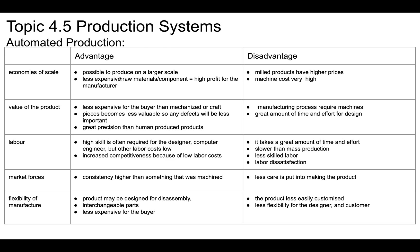It's possible to produce at a larger scale because computers are faster than humans. That means raw materials can be less expensive. Products made by people have high labor costs, but you also have a really high machine cost — those computerized milling machines are not cheap. It can be less expensive for the buyer than mechanized or craft production.